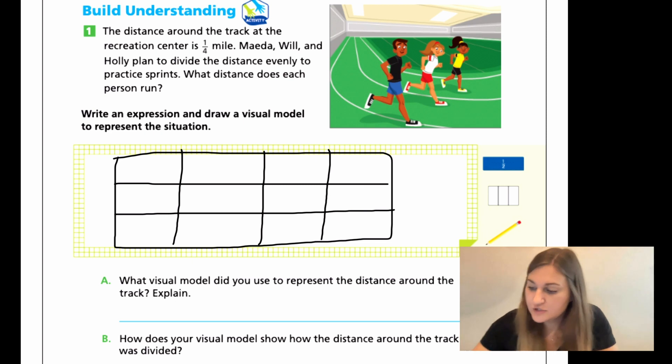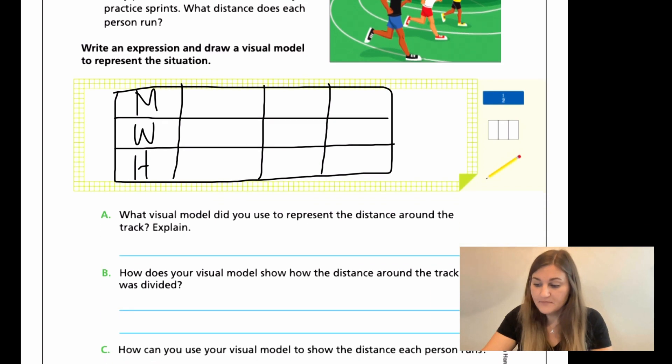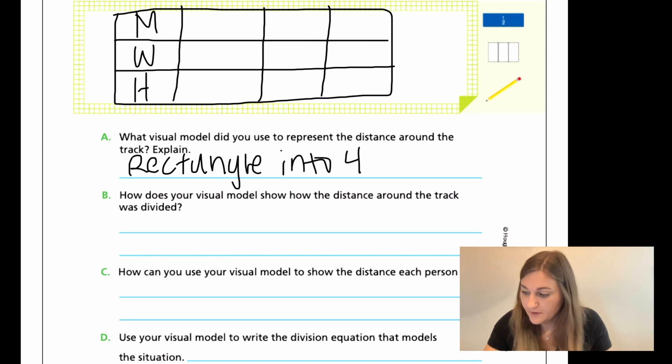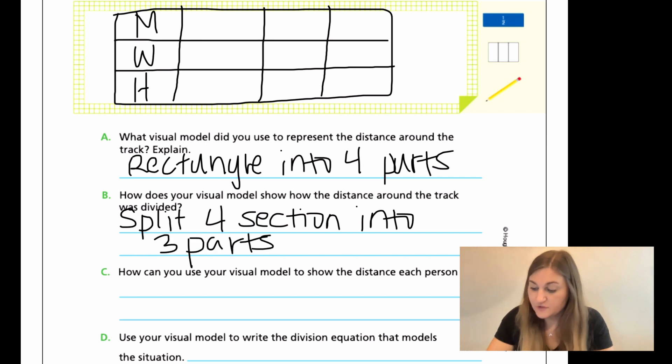And just so you can see, I'll do the first initial of each. So here was that first friend, second friend, and then the third friend. So they're each getting that section. Cause I'm only looking at the fourth and they're splitting it evenly between the three friends. Okay. So now we need to go through and explain what we just did. So it says, what visual model did you use to represent the distance around the track? I just said, I made a rectangle into four parts. As simple as that, right? So rectangle into four parts. And for B, it says, how does your visual model show how the distance around the track was divided? Well, I split those four sections into three more parts.